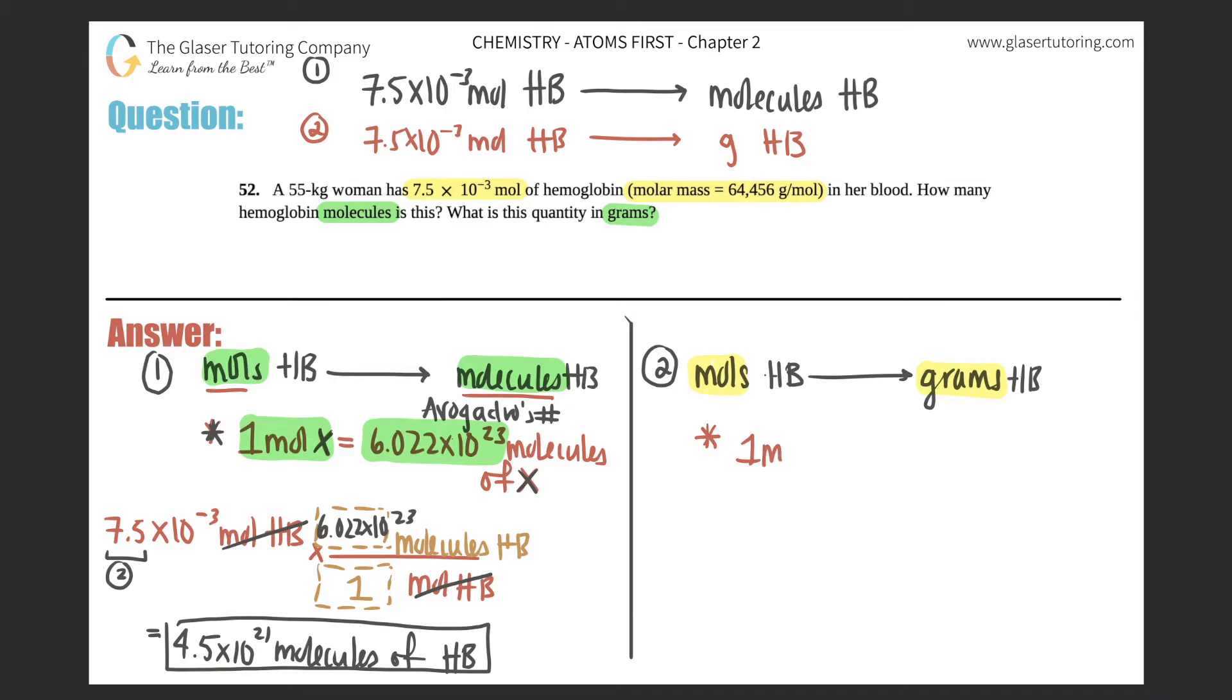One mole of anything equals the molar mass of that same thing. Molar mass units is grams per mole. So that's how you get the grams. So where are we going to find a molar mass? From the periodic table. So that's how you go from moles to grams. You use the molar mass.